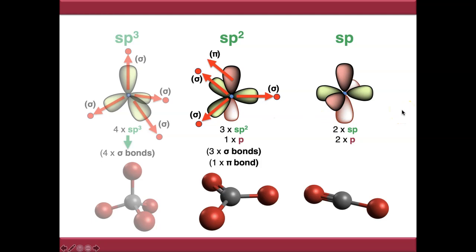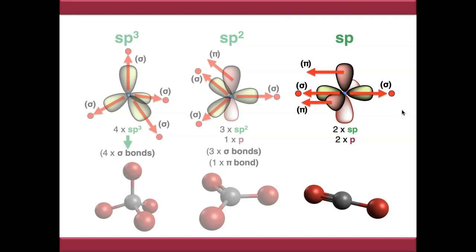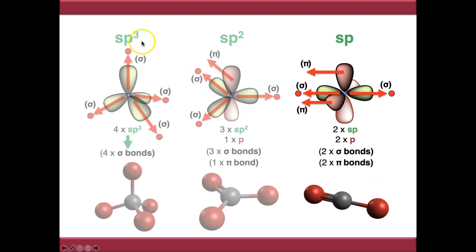The same is true of sp hybridization. We've just got two sigma bonds now, and we can form two pi bonds to either of the atoms - either a triple-bonded carbon in one direction, or a double bond on each side. So: sp3 hybridization gives four sigma bonds and a tetrahedral geometry; sp2 gives three sigma bonds and one pi bond and a trigonal planar geometry; and sp gives two sigma bonds and two pi bonds and a linear geometry.